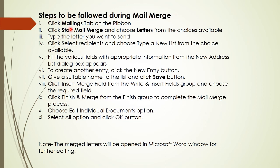We can follow these steps during mail merge: click the Mailings tab, click Start Mail Merge, type the letter, click Select Recipients, and fill in the various fields. To create another entry, click the New Entry button, then give a suitable name. Click Insert Merge Field, then click Finish and Merge and choose Edit, and select all options. This is one alternative way — different ways are also available. The merged letters will be opened in a Microsoft Word window for further editing.